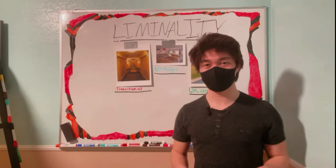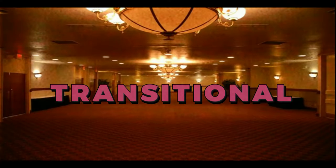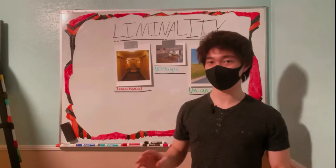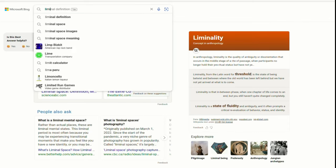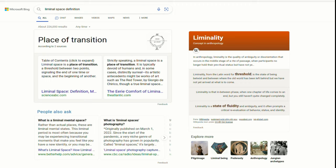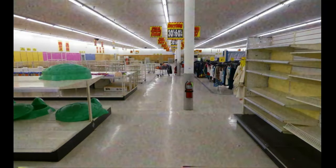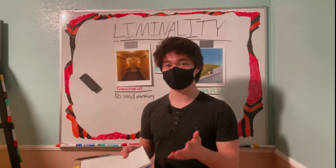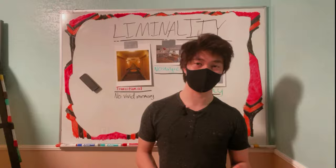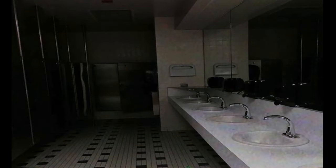From what I have found, there are three types of liminal photos: transitional, nostalgic, and uncanny. Transitional photos are the most prevalent type of liminal photo. It also just so happens to be the first definition that you see if you look up what a liminal space is. Hallways, airports, and grocery stores — places that you've been to multiple times but have no concrete memory of, because they're transitional spots, places between point A and point B.